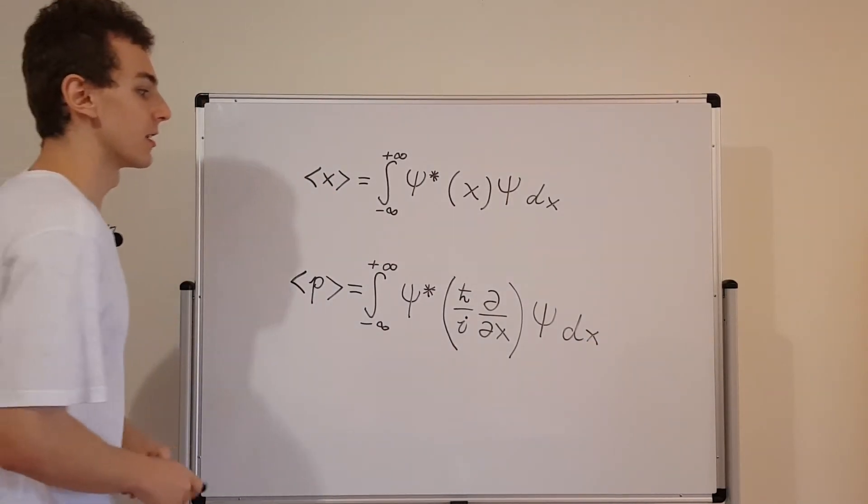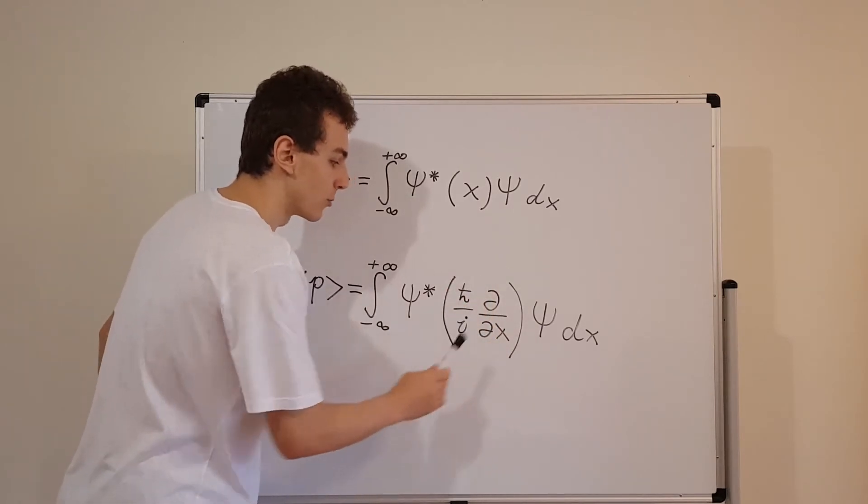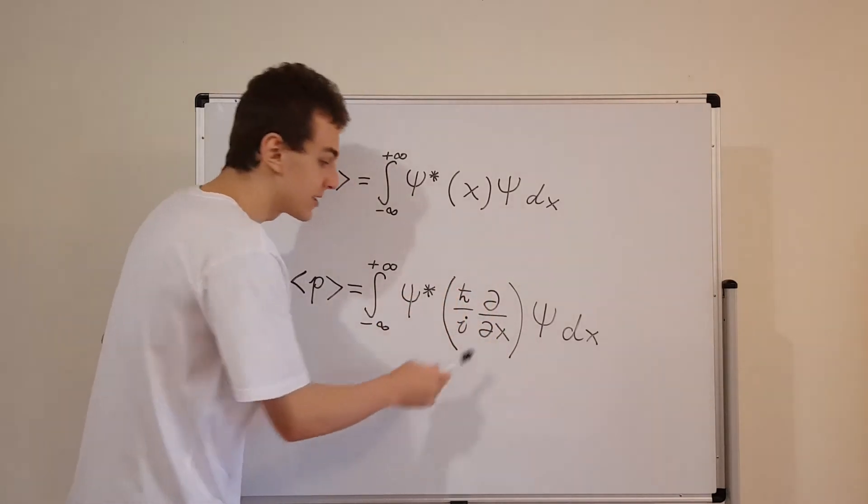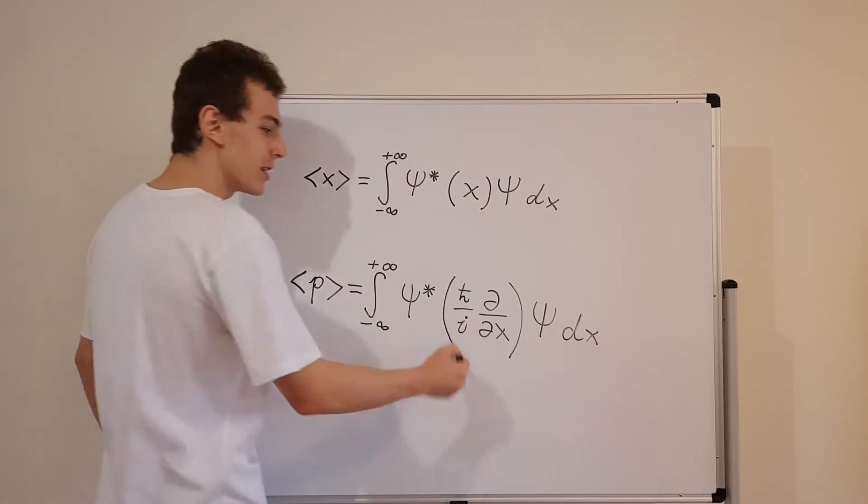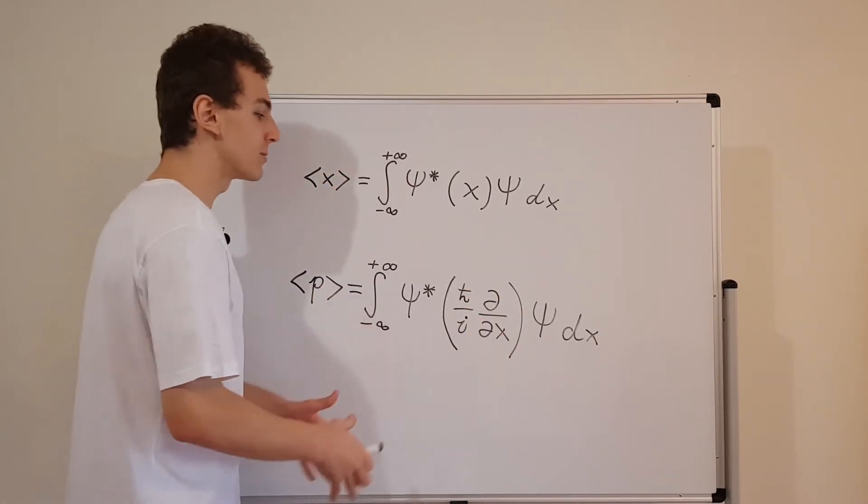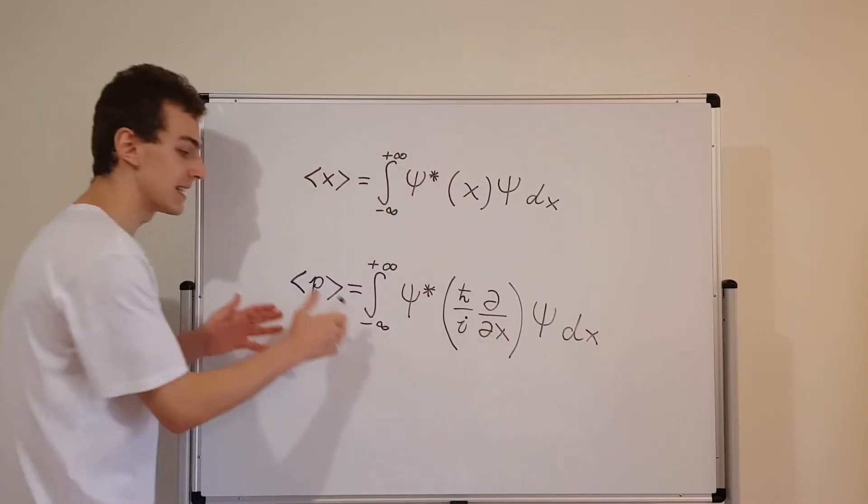So what is going on over here? Over here we have an x, and over here we have some combination of a derivative and a constant. And this constant actually has the imaginary unit i inside it. So it's a very strange combination. But what we're actually saying here is we need to sandwich an operator in order to find its expectation.